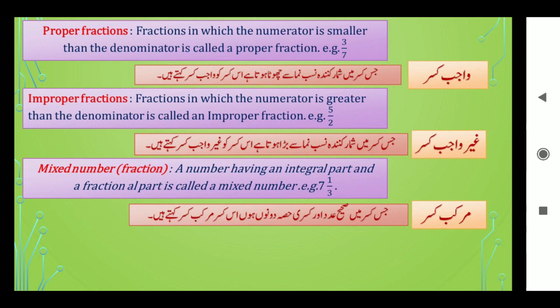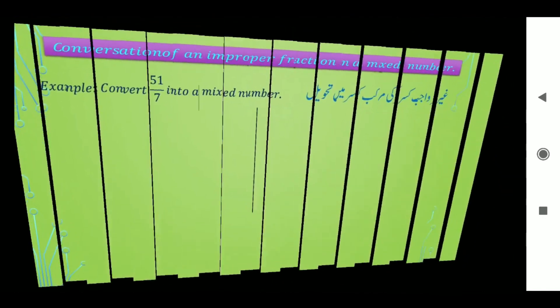Seven is the integral part and one upon three is the fractional part۔ ساتھ جائے تو صحیح عدد ہے اور ایک بٹے تین قصری حصہ ہے — یہ ایک مرقب قصر کی مثال ہمارے سامنے نظر آ رہی ہے۔ آگے بڑھتے ہیں۔